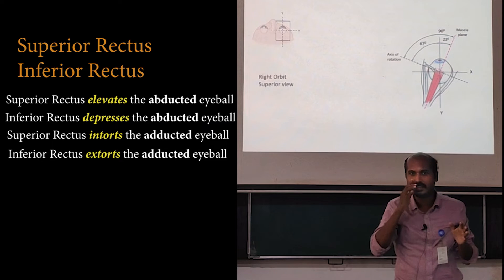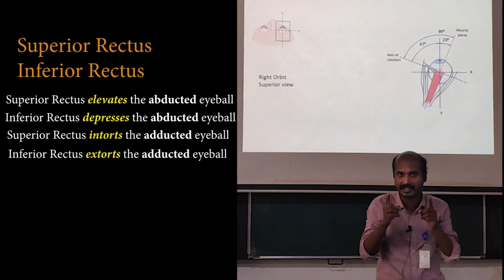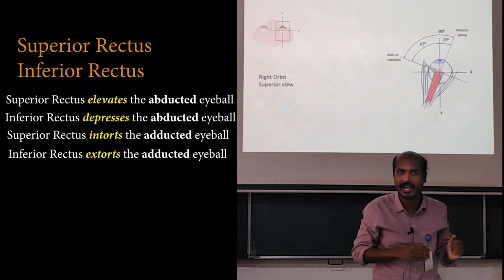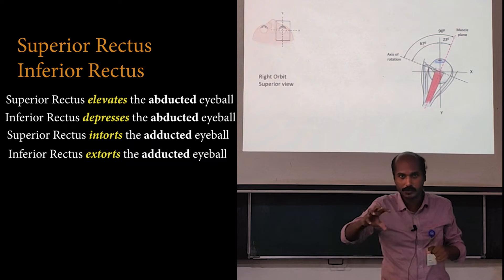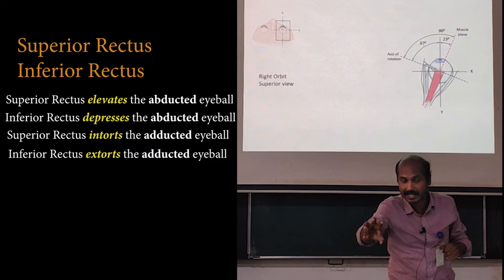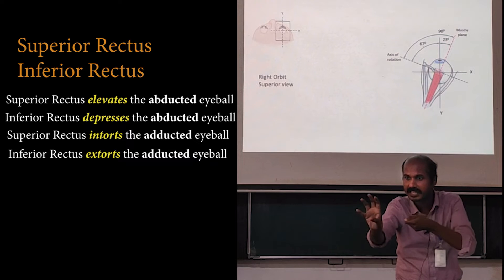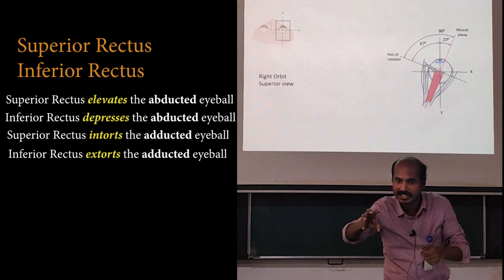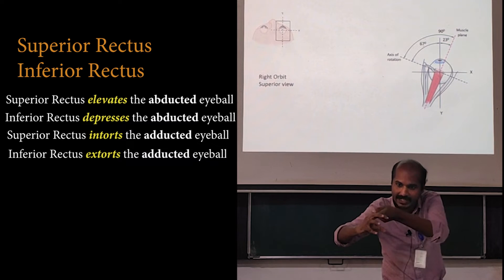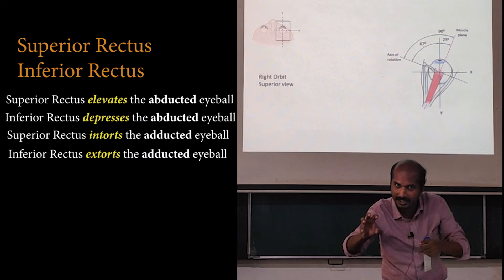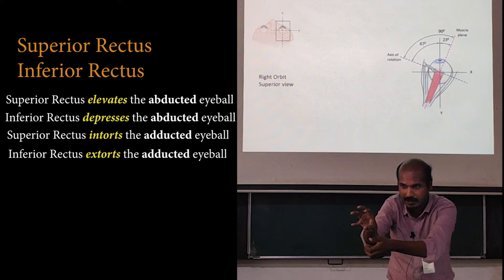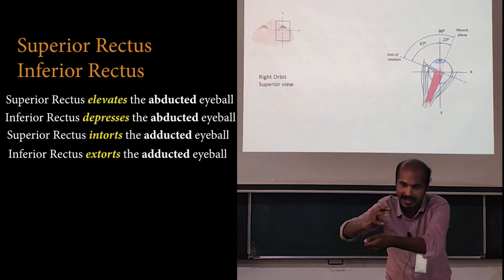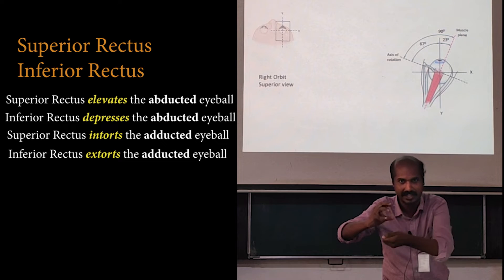So you can understand that the superior rectus is not only having a single action — it can have secondary actions depending on the position of the eyeball. Superior rectus is an elevator of the abducted eye, but it is an intorter of the adducted eye. The inferior rectus is a depressor of the abducted eye, but it is an extorter of the adducted eye.